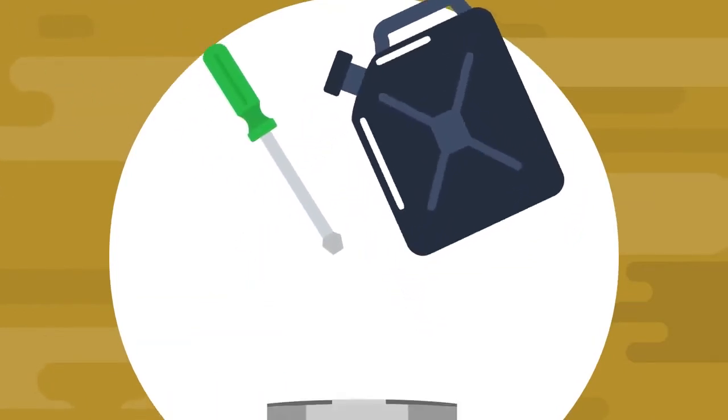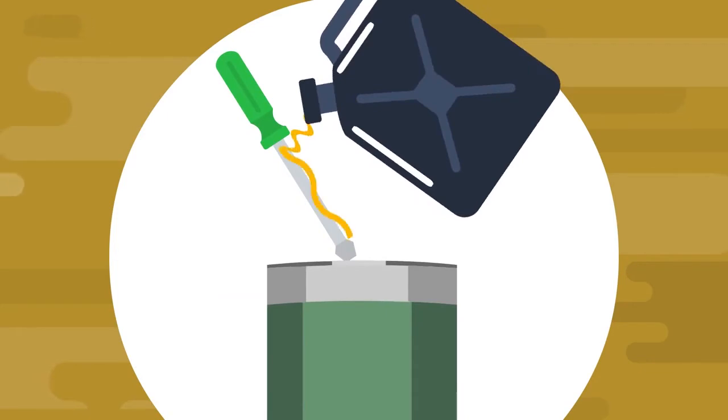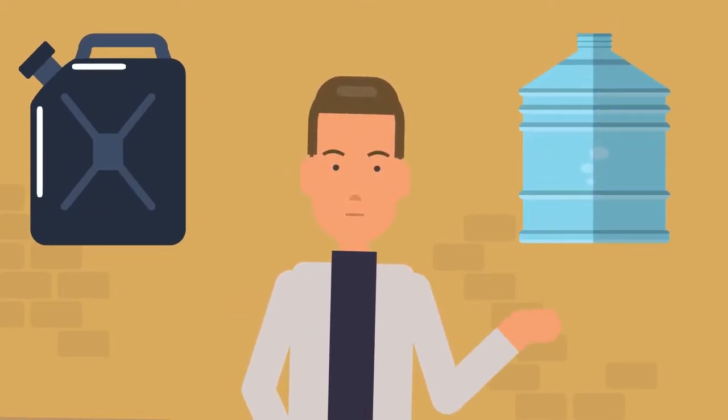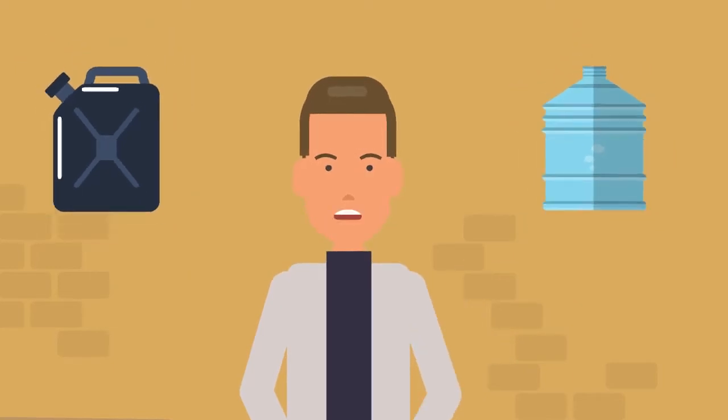Pour oil just along the screwdriver's shaft into the container or tank. This technique works better for more viscous liquids, but also fits for water. Try it next time in a workshop.